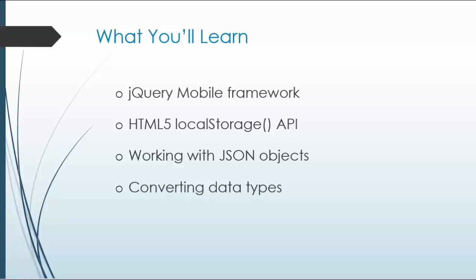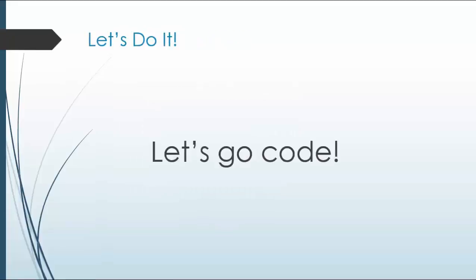We'll learn quite a bit — the gist of it is the jQuery Mobile framework and the Local Storage API. We'll also be working with JSON objects and converting data types, since local storage can only store strings natively. I'll show you how to use a JSON object, convert it into a string to store it, then take it out and convert it back to an object so we can loop through it or do whatever we need to do. That's a brief explanation of the project, and I will see you in the next video.